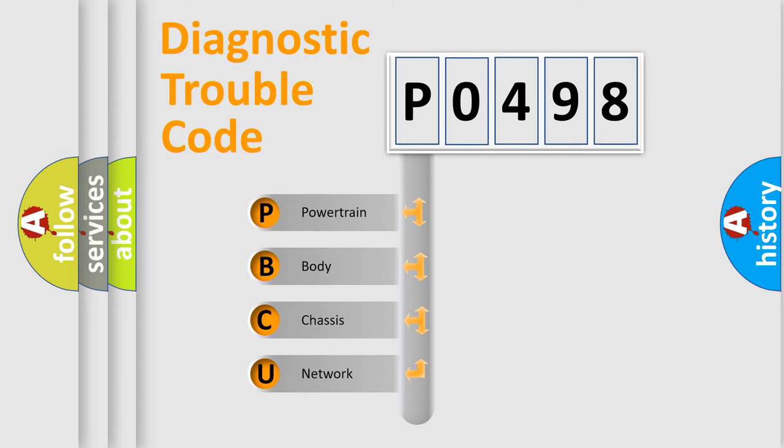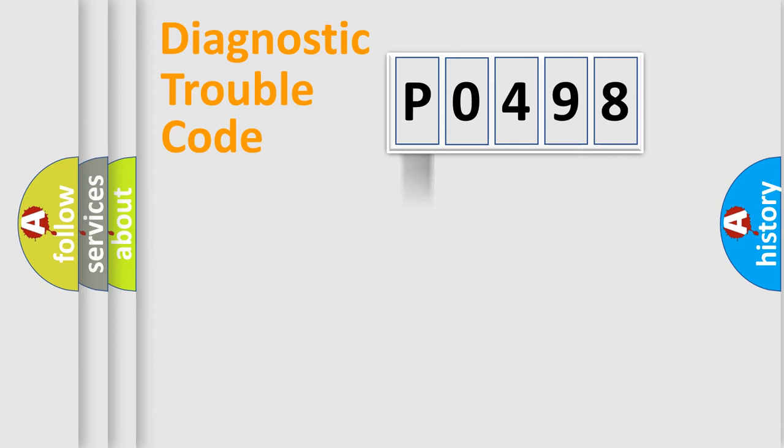We divide the electric system of automobile into four basic units: Powertrain, Body, Chassis, and Network. This distribution is defined in the first character code.